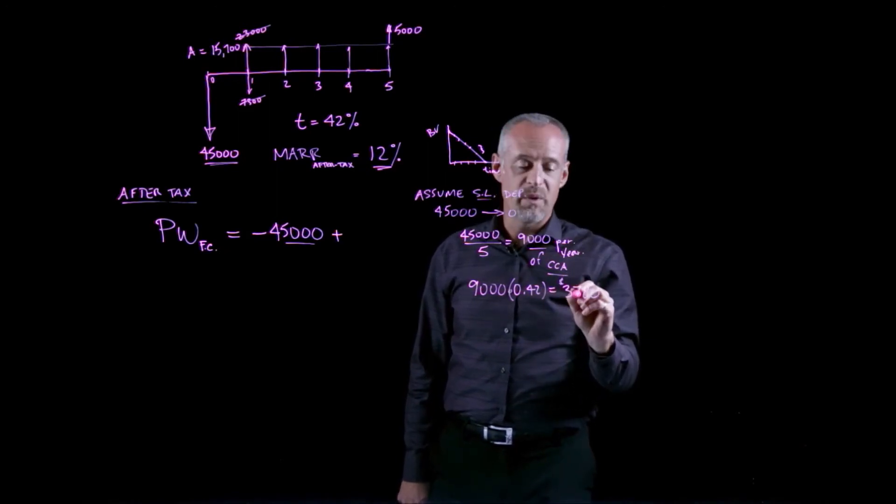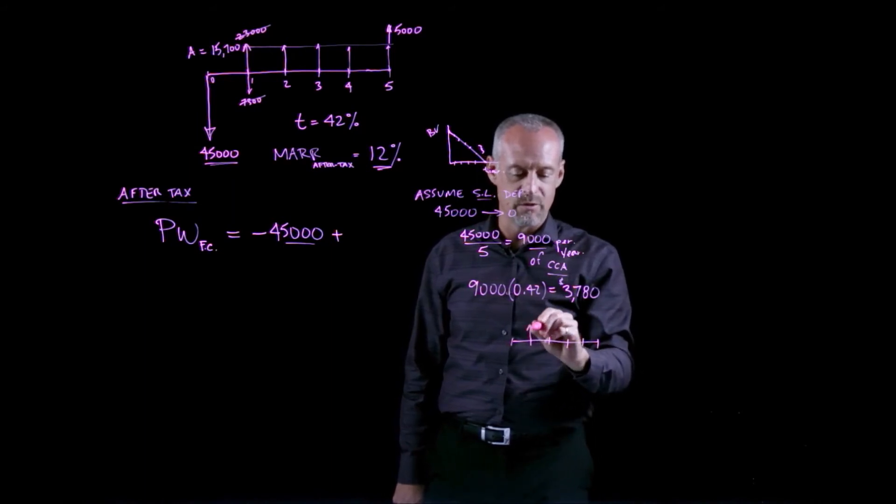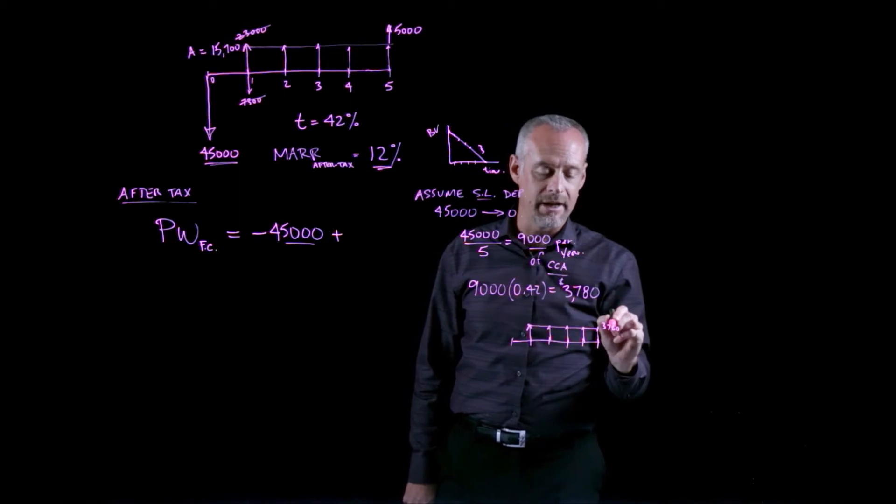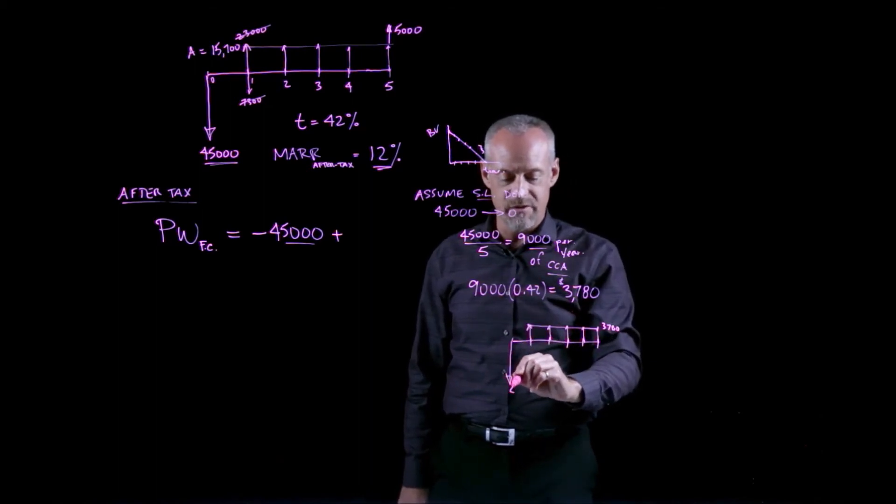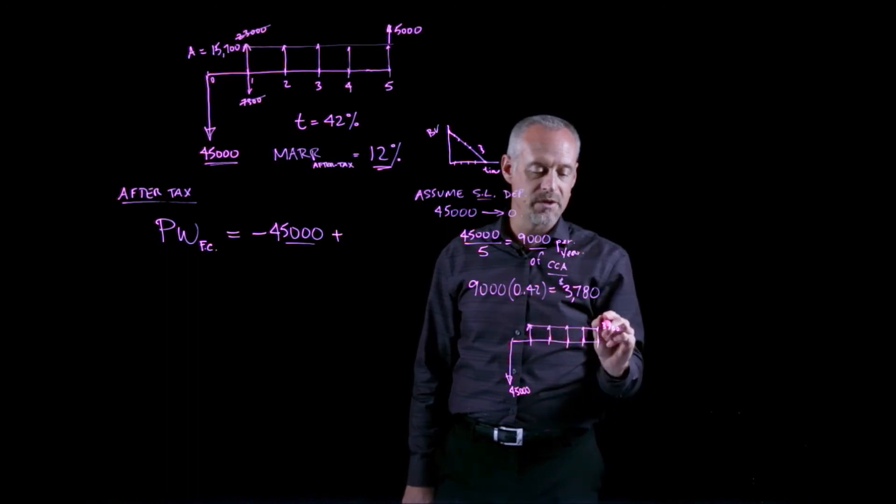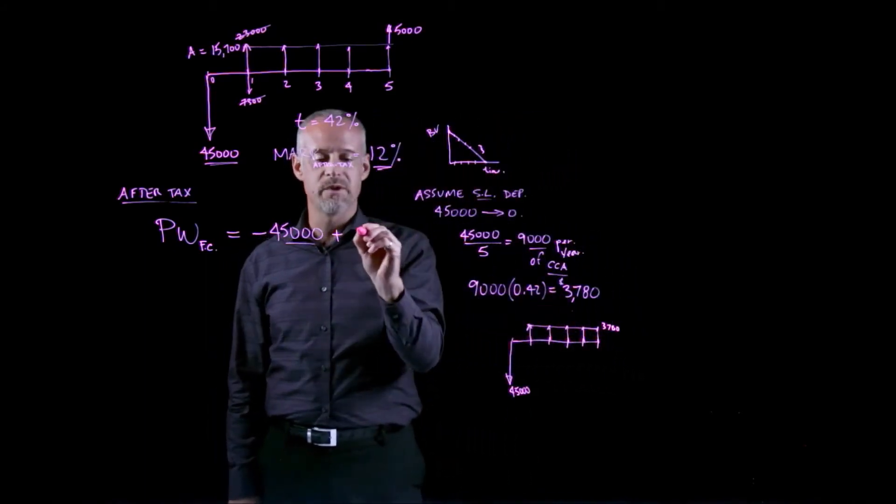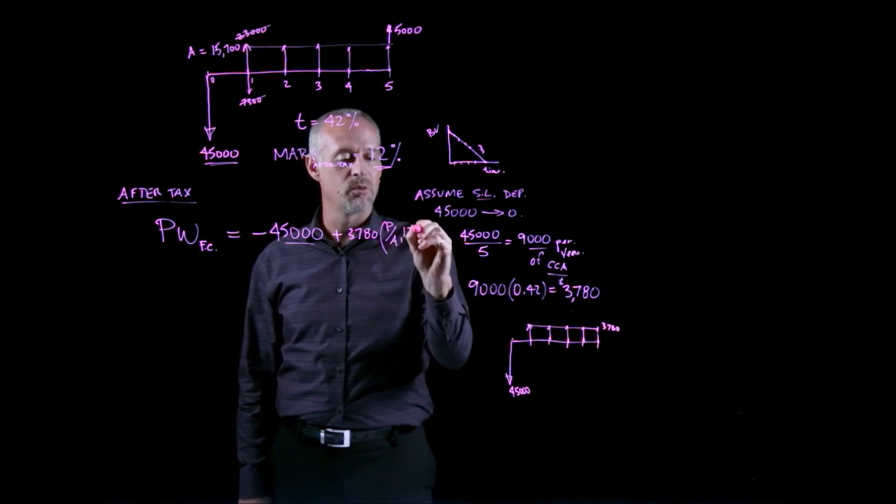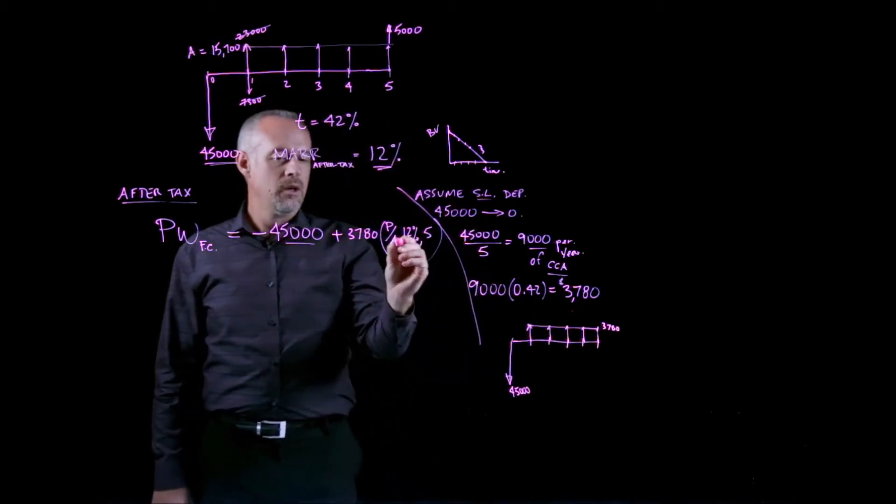So that would appear as a positive cash flow on a cash flow diagram. And so really we've got this annuity every year. We're saving $3,780 in tax because we bought this asset. So if we look at just the purchase of the asset, the cash flow diagram looks something like this. We have a $45,000 outlay at the beginning, and then we save $3,780 every year in tax because of the depreciation expense. And the way that we'll deal with that over here is we'll just take the $3,780, we multiply by the P given A factor for 12% and 5 years.